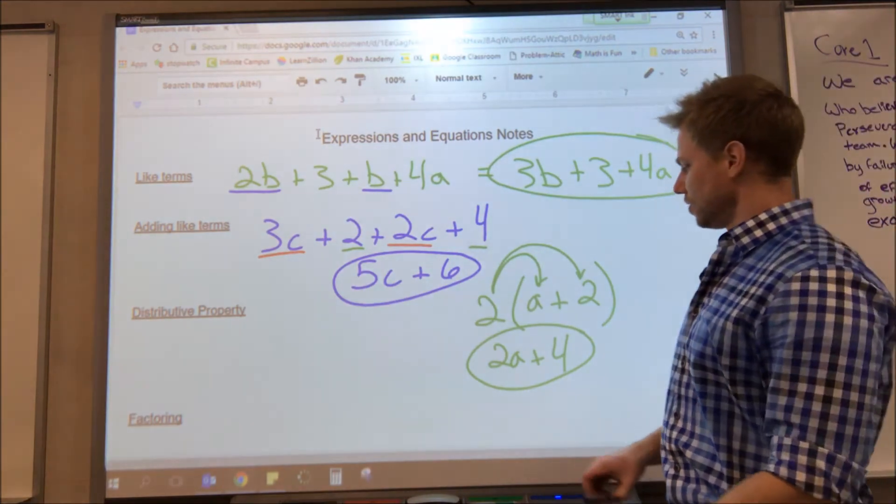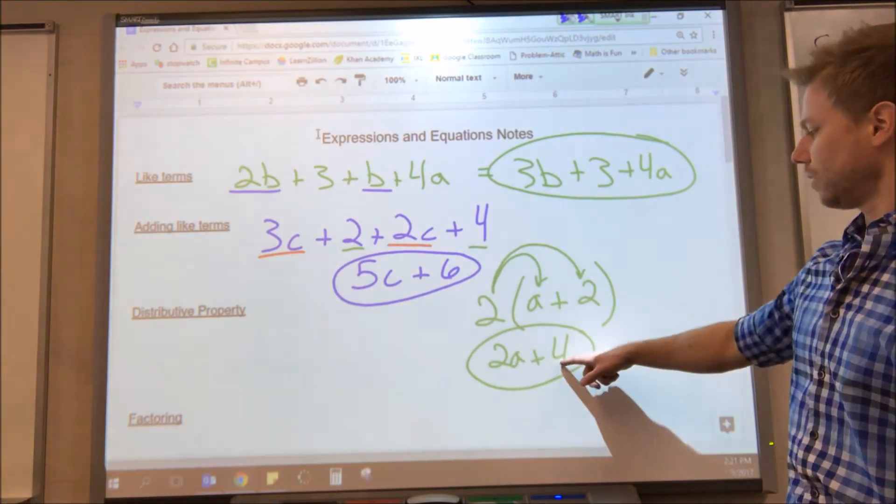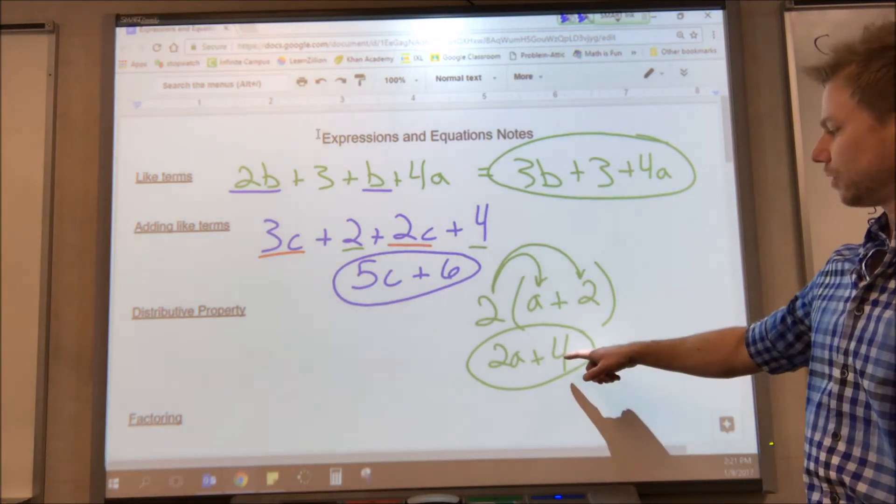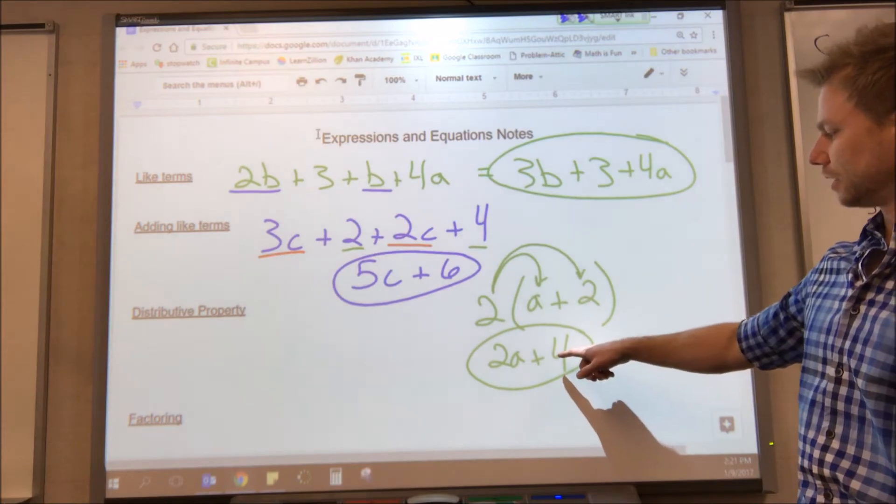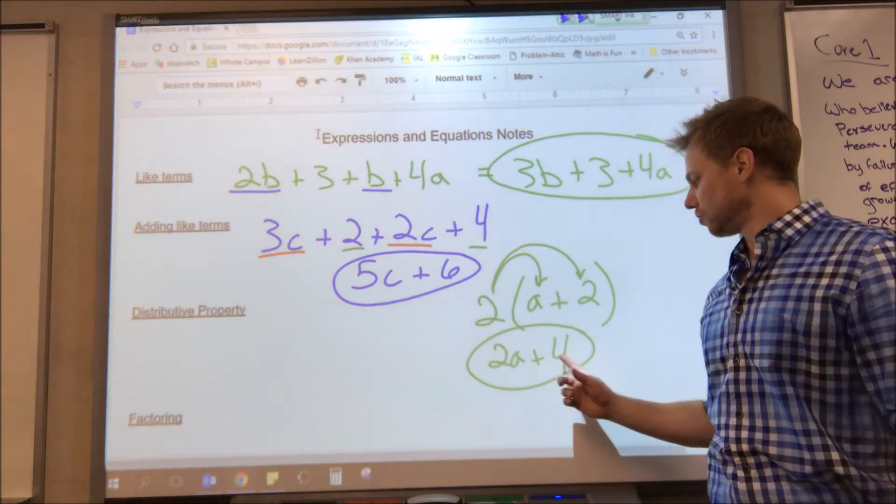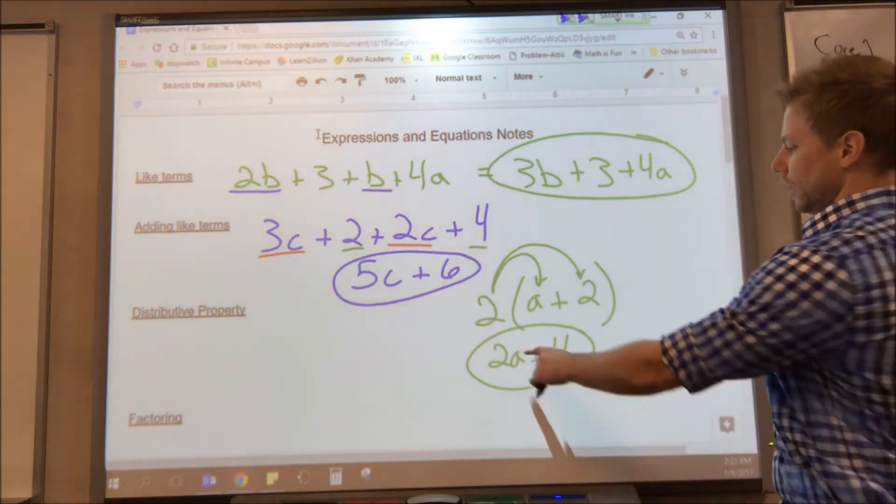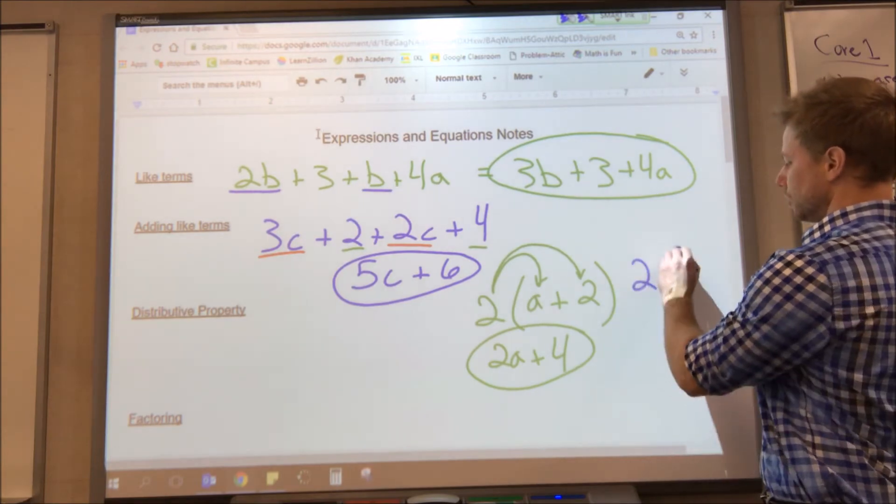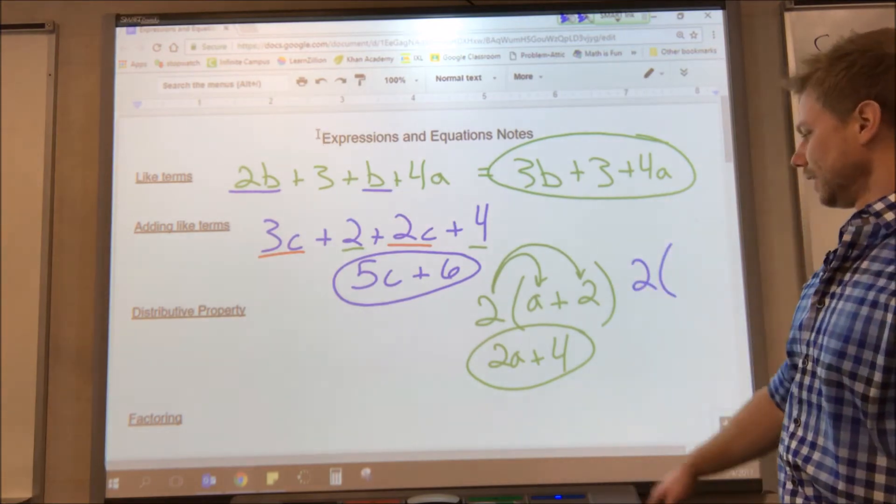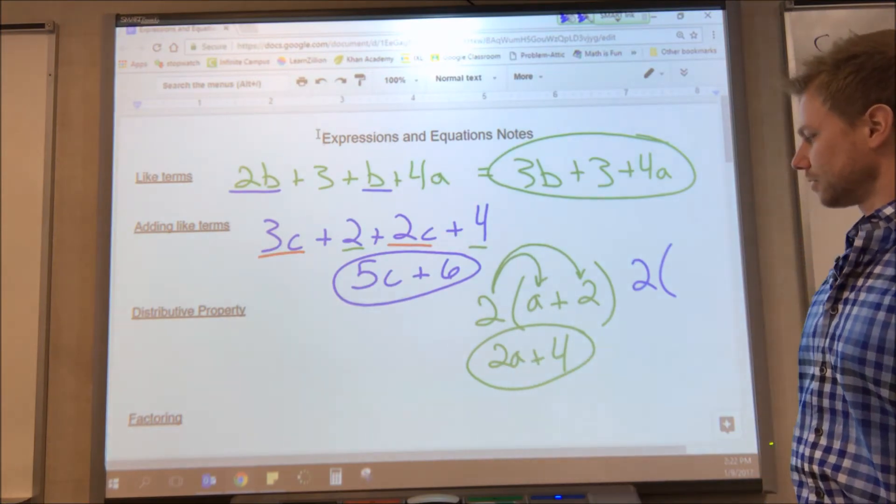Factoring is the exact opposite of distributing. So if I would start with 2a plus 4, I have to figure out what the greatest common factor is. Greatest common factor is the biggest number that goes into both of those terms evenly. The greatest common factor between 2 and 4 is 2. And then what I do is I divide each term by the greatest common factor.